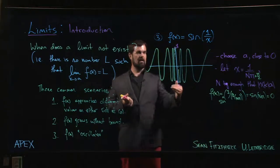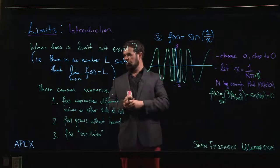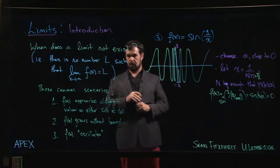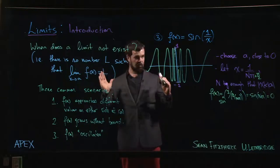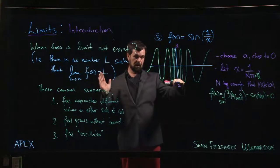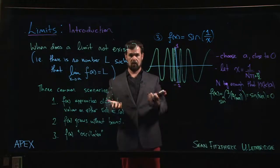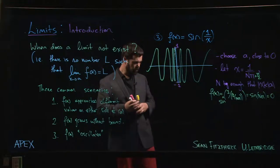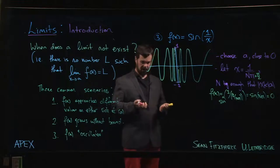So it doesn't matter how close you get, you're hitting all those values. So you certainly cannot assign a number here because you're hitting every single value between minus one and one. There is no one value that you're approaching. So you can get some bad behavior like that.